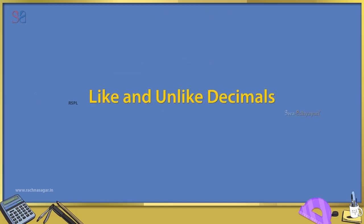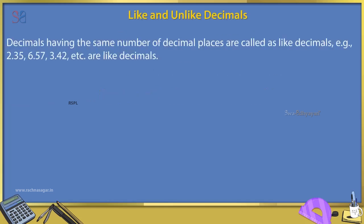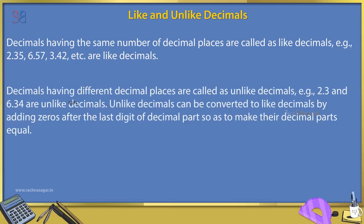Like and unlike decimals: Decimals having the same number of decimal places are called like decimals. Example: 2.35, 6.57, 3.42 etc. are like decimals. Decimals having different decimal places are called unlike decimals. Example: 2.3 and 6.34 are unlike decimals. Unlike decimals can be converted to like decimals by adding zeros after the last digit of the decimal part so as to make their decimal places equal.